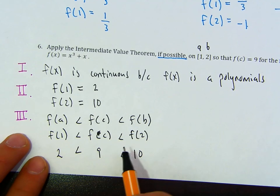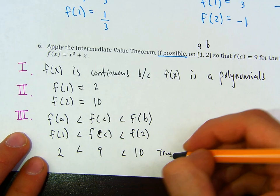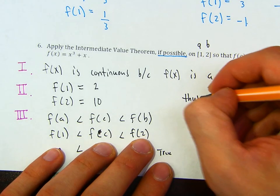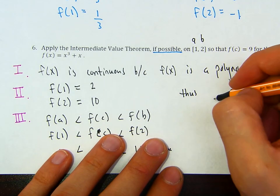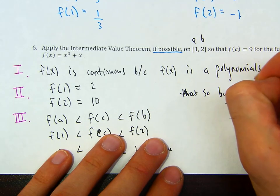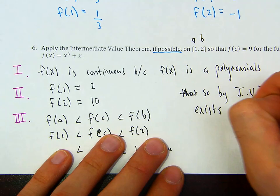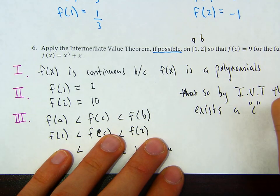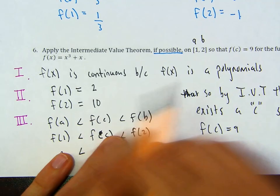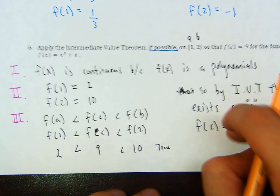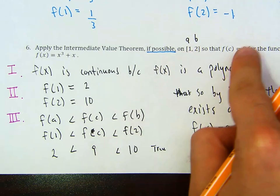Is this true? Is 9 greater than 2 but less than 10? Yes, that's true. But if you just say 'true' and leave it, it's not enough. You have to say: thus, by IVT, there exists a c such that f of c equals 9. You're not asked to find the value of c — all you know is that there is a c value. There is a value of x within this interval that if plugged in gives 9.